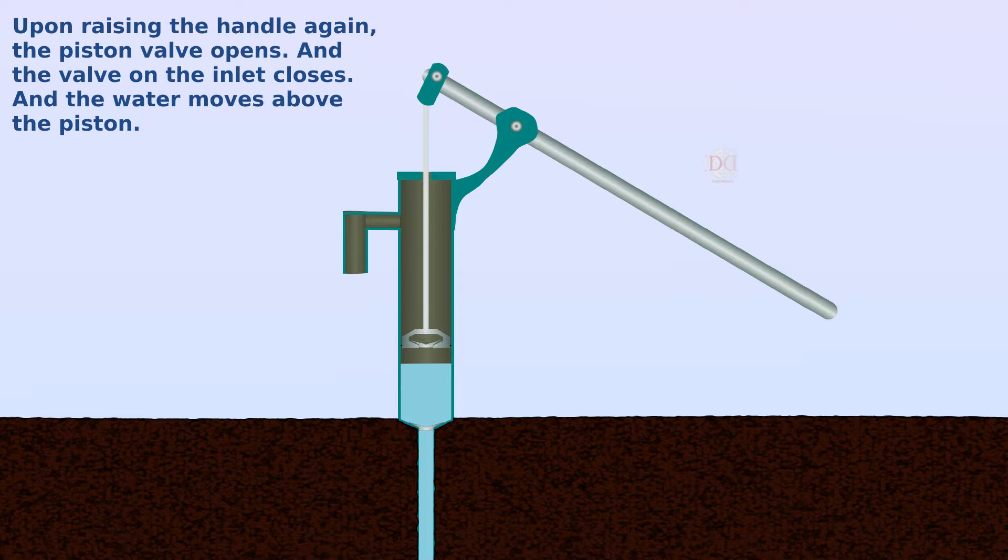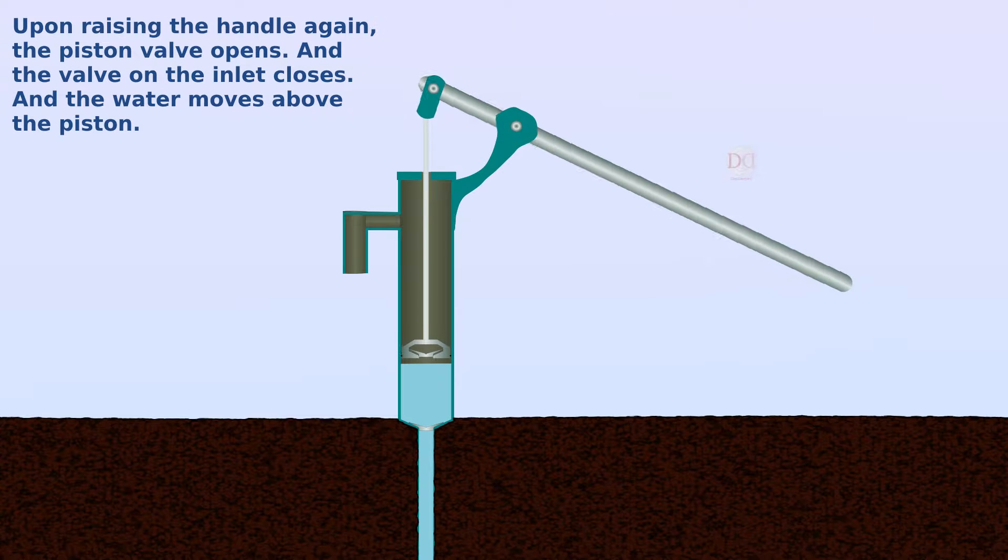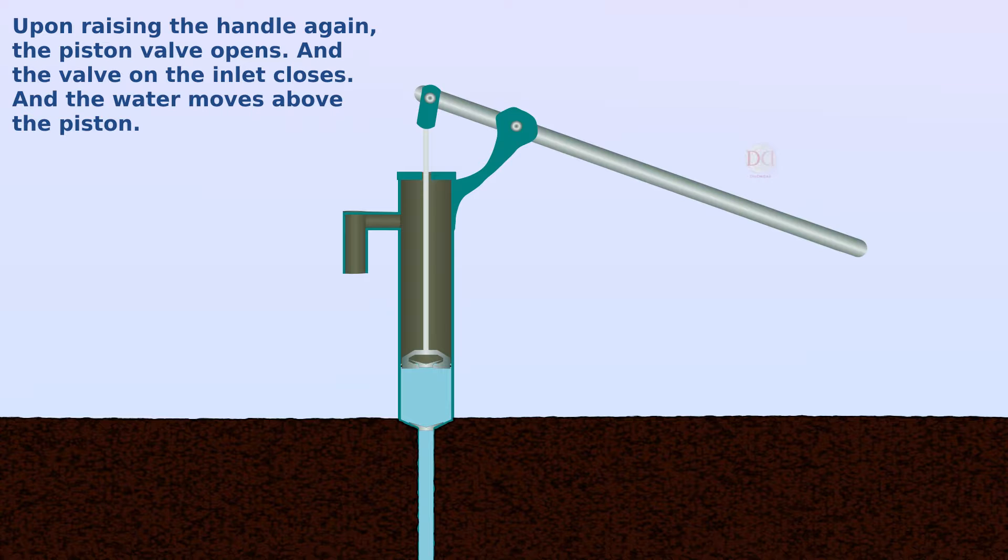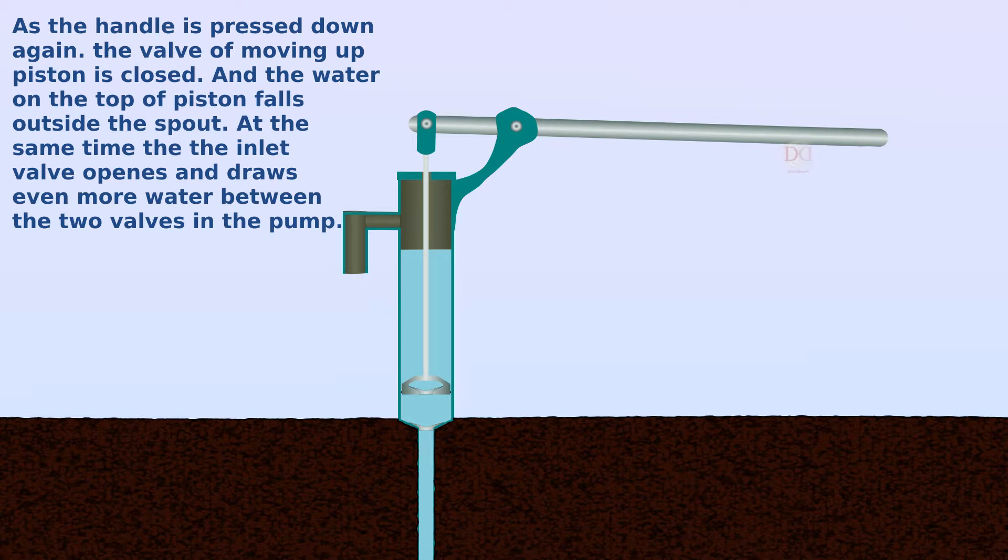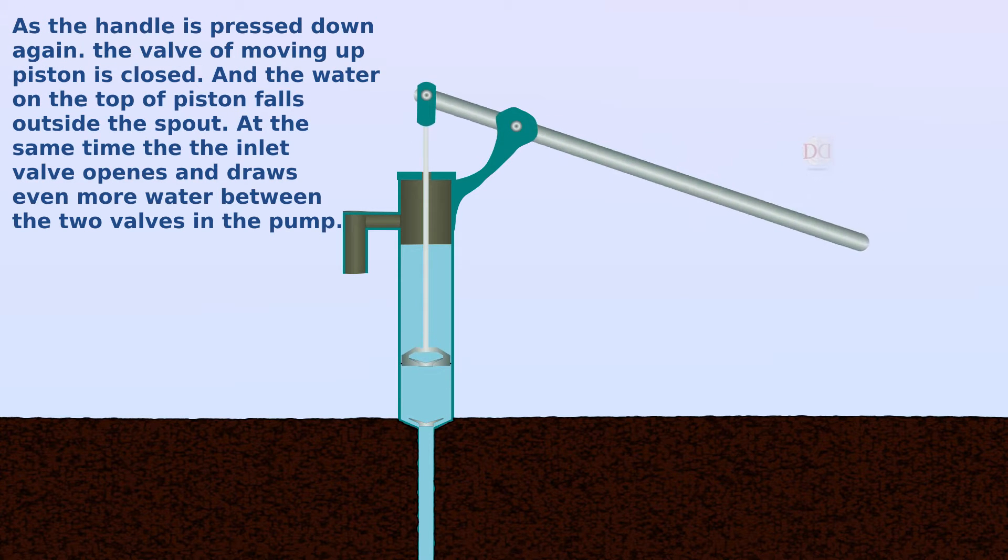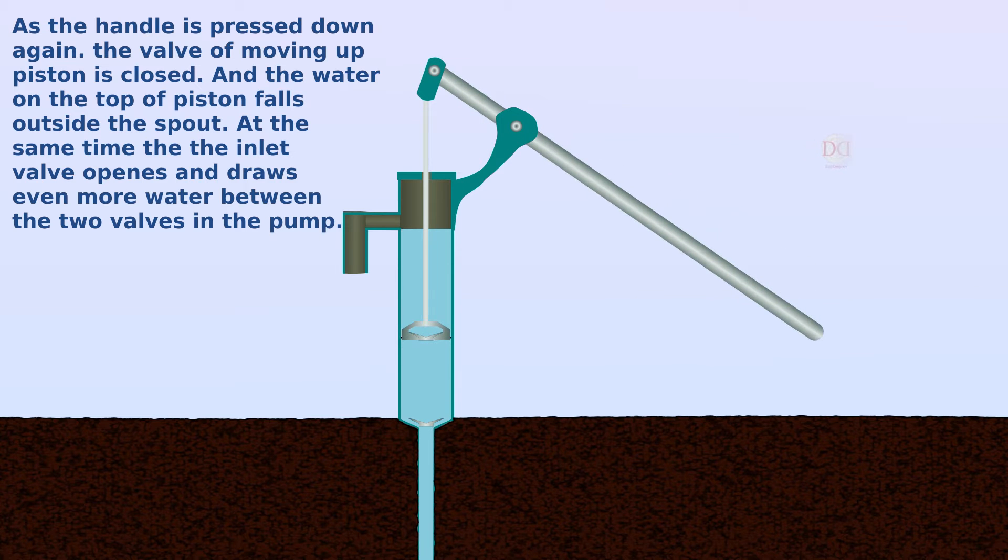Upon raising the handle again, the piston valve opens and the valve on the inlet closes and the water moves above the piston. As the handle is pressed down again, the valve on the moving piston is closed and the water on top of the piston flows outside the spout.